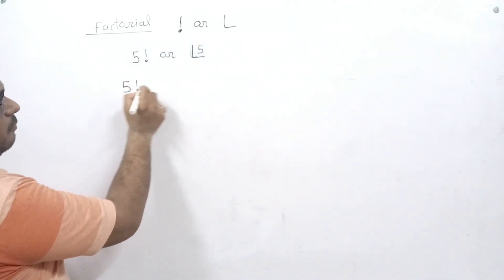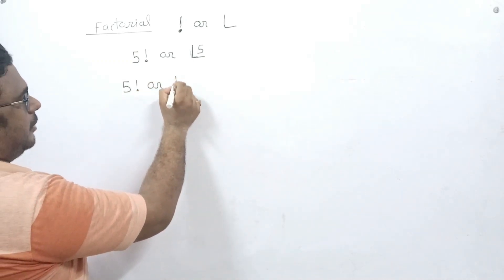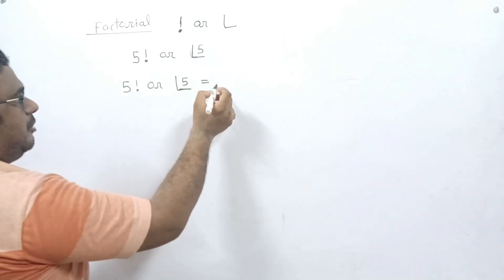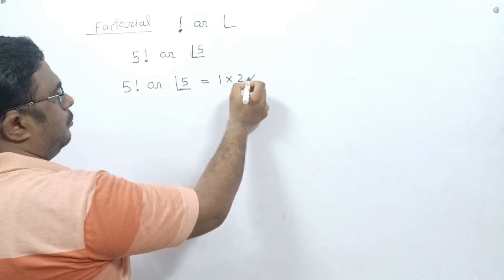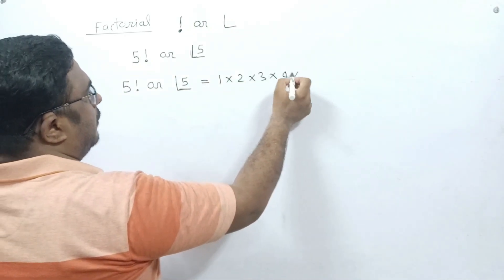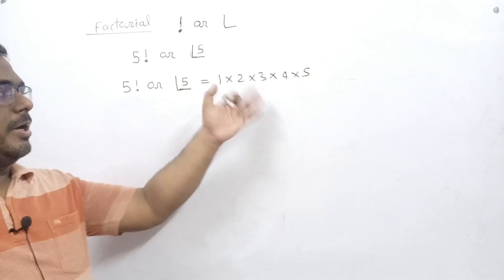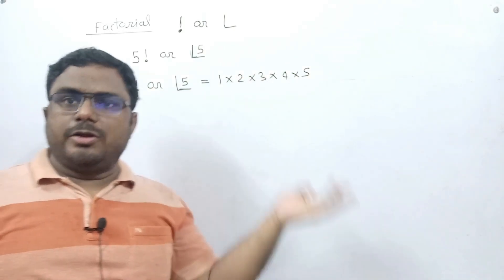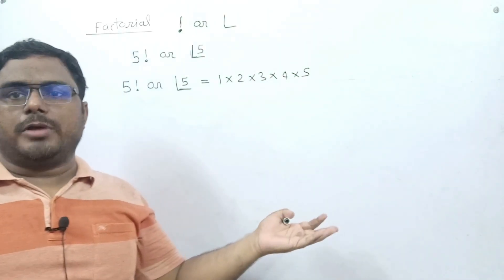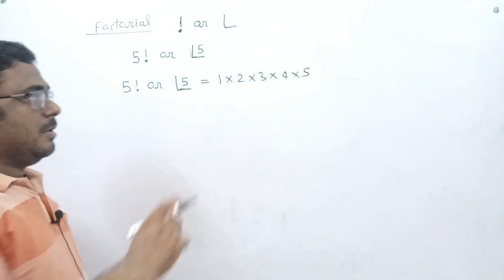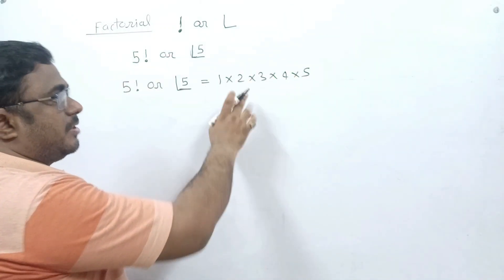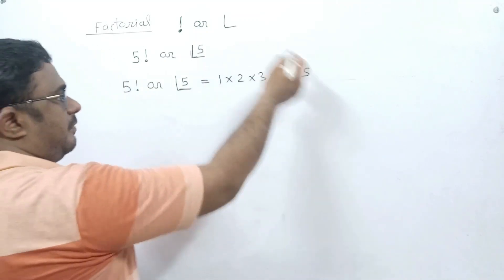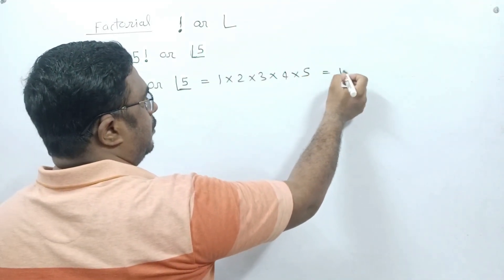Suppose I want to find out the value of 5 factorial or factorial 5, then its value will be 1 × 2 × 3 × 4 × 5. You can also write it as 5, 4, 3, 2, 1 in descending order or ascending order — it is your choice. But you have to multiply the first 5 natural numbers, and after multiplication you will get 120.